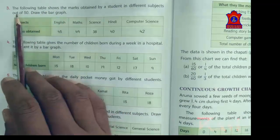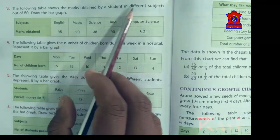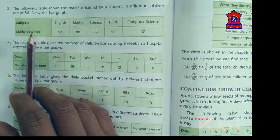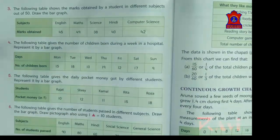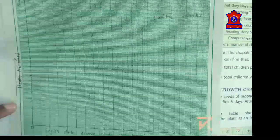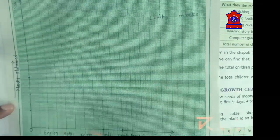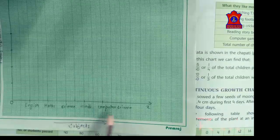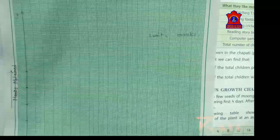Question number three: the following table shows marks obtained by a student in different subjects out of 50 — draw the bar graph. The data gives subjects and marks obtained. On the graph paper, the vertical line is the y-axis showing marks obtained, and the horizontal x-axis shows subjects: English, Math, Science, Hindi, Computer.